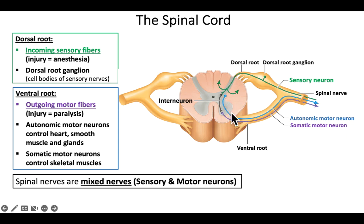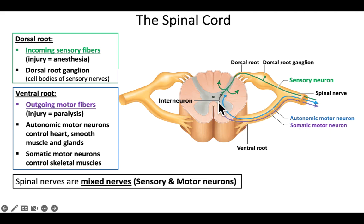This blue neuron might be an autonomic motor neuron going to an internal organ — maybe the liver or the intestines. The purple is showing a somatic motor neuron, and that neuron is going to some skeletal muscle. Both of those are motor and they're packaged together in the ventral root. If you were to injure only a ventral root, that would cause paralysis — when you can't get a motor signal to the effector.